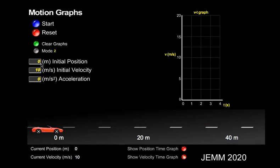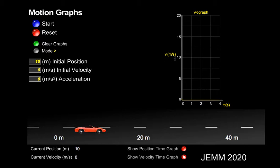Now we're going to look at a velocity time graph for the same situations we looked at previously. Starting with an initial velocity of zero and a position of 10 meters. On a velocity time graph, with velocity being the y-axis and time being the x-axis, when the object is stopped, it's just a line across the zero indicating there is no velocity.